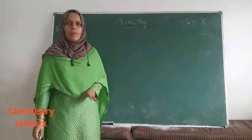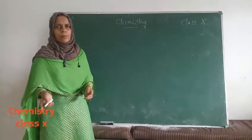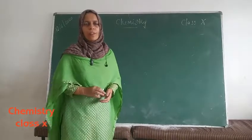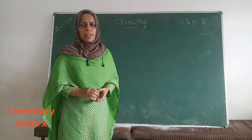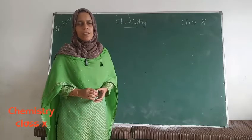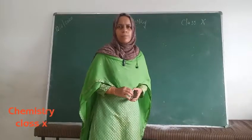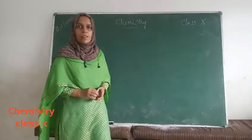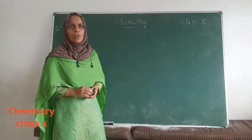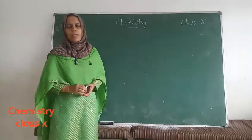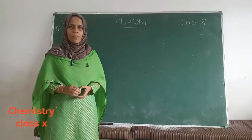In your textbook, the first five chapters are from chemistry. The first one is chemical reactions and equations. Second one is acids, bases and salts. Third one is metals and non-metals. Fourth one is carbon and its compounds. And the fifth is periodic classification of elements.